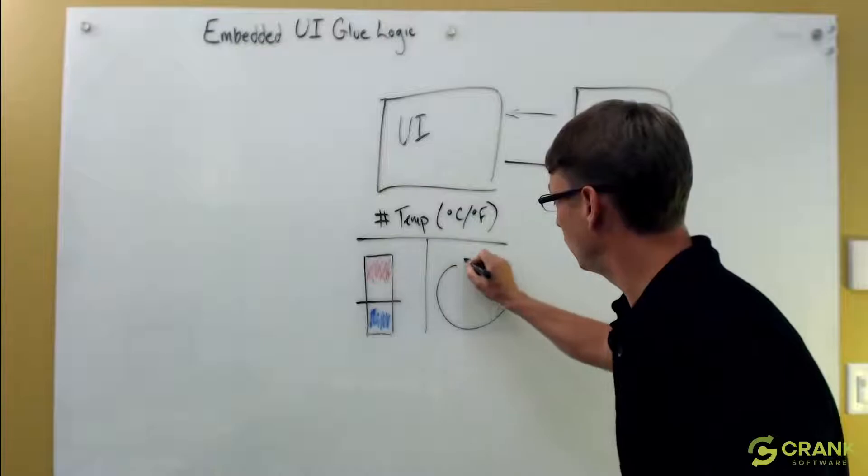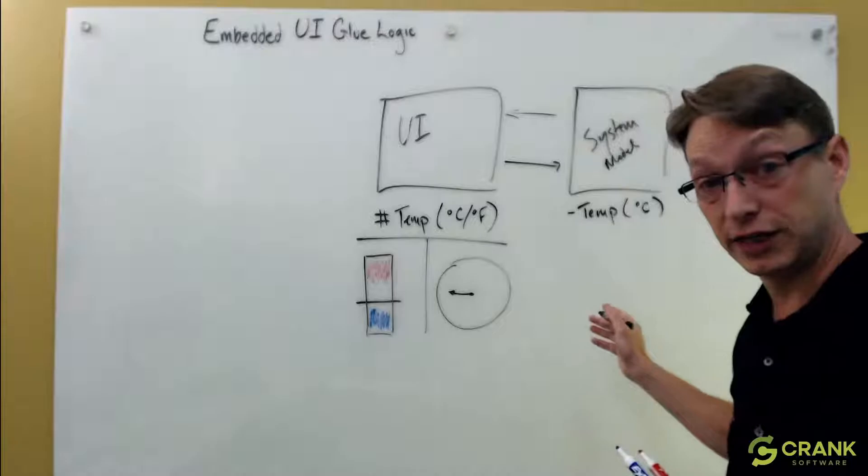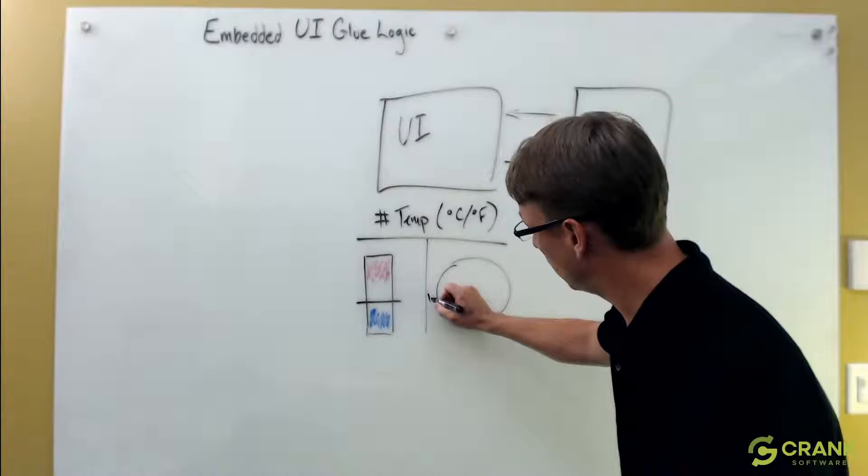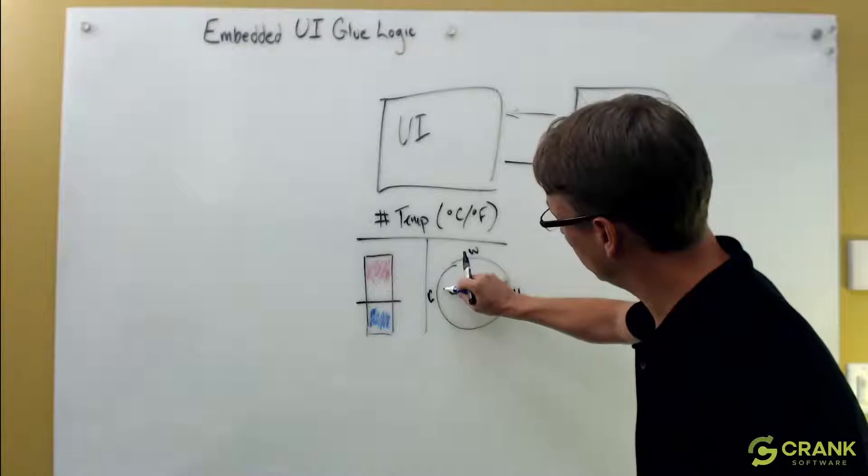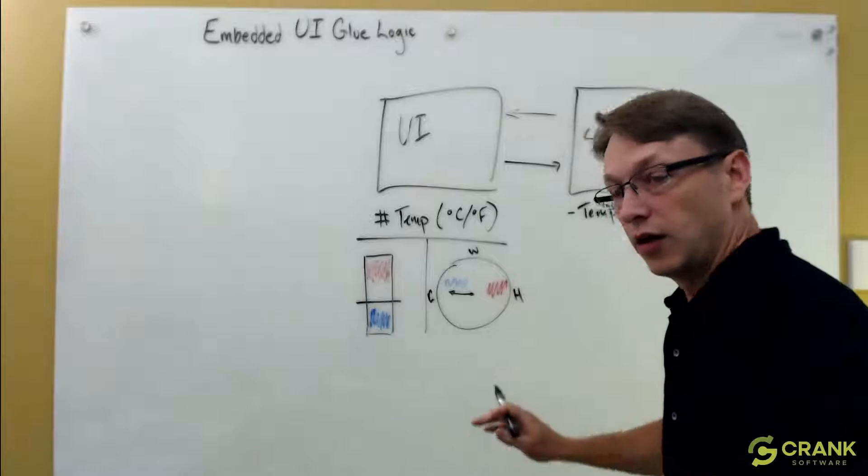Or some other combination. Just to give us a few different flavors - there's lots and lots of different ways to represent this. Maybe we have a gauge. My gauge, very sophisticated gauge here, might have cool, warm, hot, and maybe some sort of indicators in here in terms of gradients. Maybe we're changing the arrows as well. Lots and lots of different visual representations.